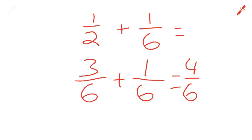We add these and we get 4 over 6. That can be reduced though. What goes into both 4 and 6? 2 does. 2 goes into 4 two times. 2 goes into 6 three times. 2 over 3 is our answer.